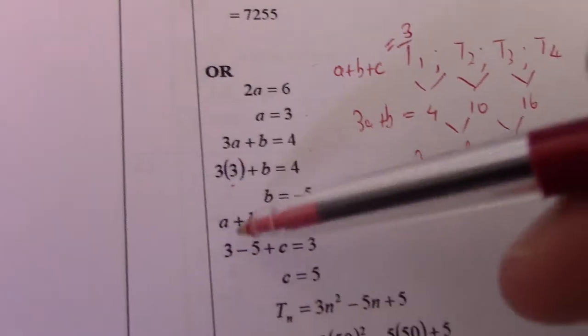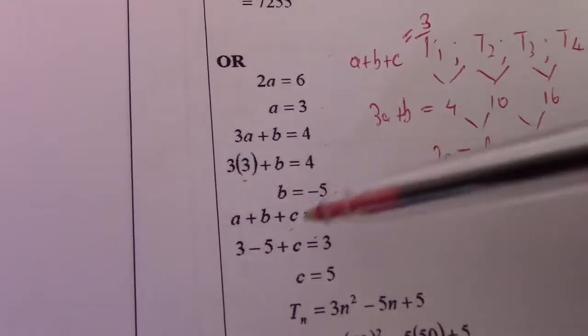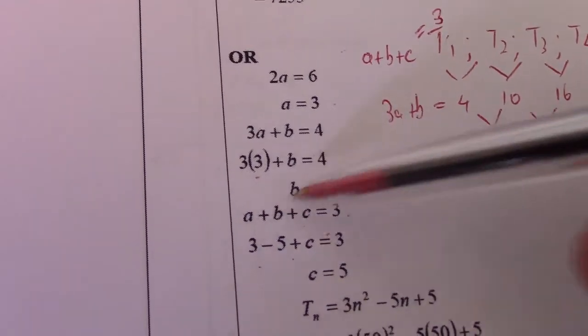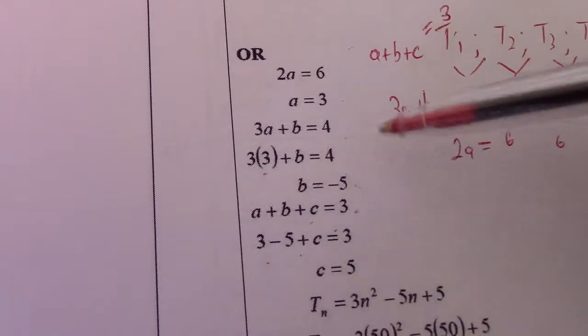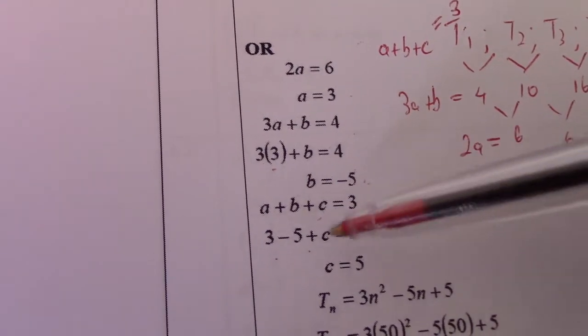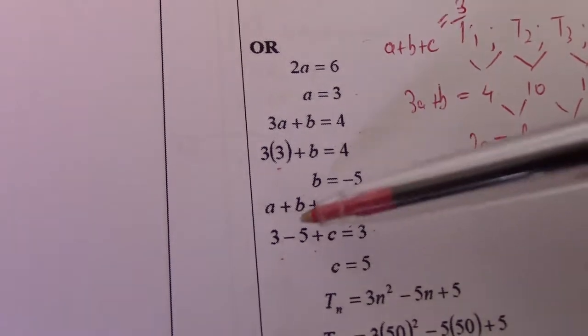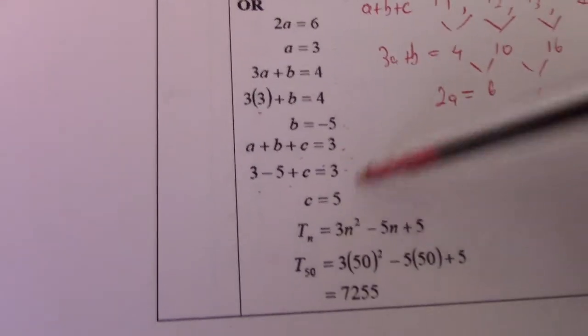So b is minus 5. Now a plus b plus c equals 3, so if I substitute the values I've found, 3 minus 5 plus c equals 3. If I take that over, 3 minus 3 is 0, minus 5 becomes plus 5, so c equals 5.